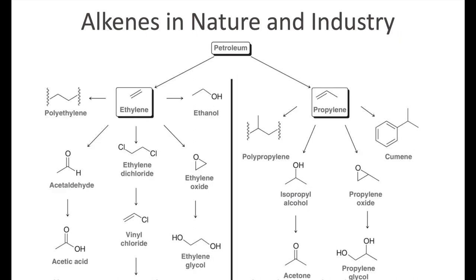As alluded to in the introduction, alkenes have a heavy presence in industry. The two heavily used molecules, ethylene and propylene, both derived from petroleum, can be used to make a plethora of molecules — like acetic acid, acetone, isopropyl alcohol — or to the plastics we talked about earlier, like polyethylene.